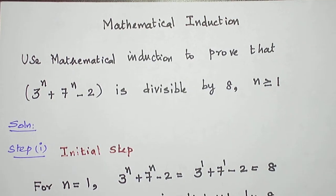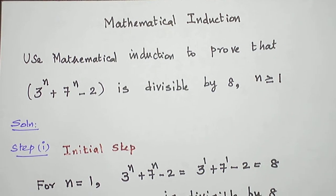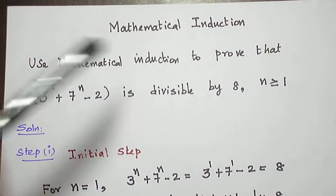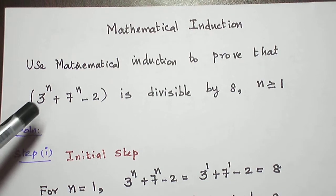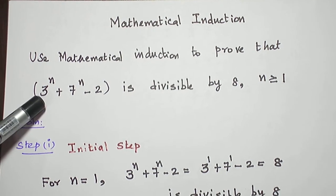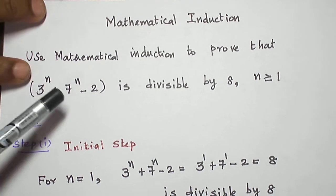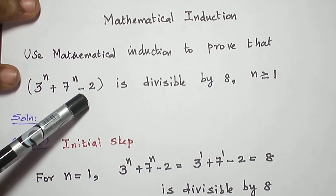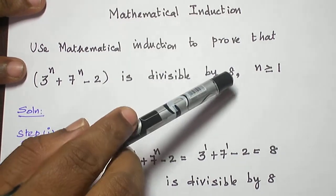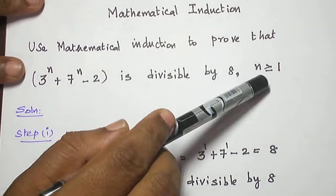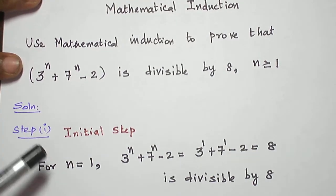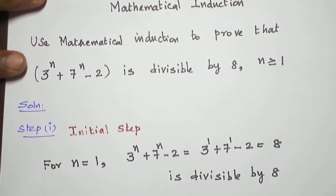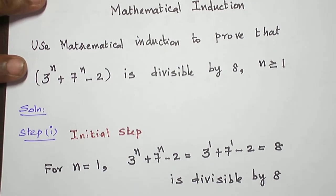Students, today let us see a problem from the topic mathematical induction. The expression 3 power n plus 7 power n minus 2 is divisible by 8 for n greater or equal to 1. This is what we are asked to prove using mathematical induction.